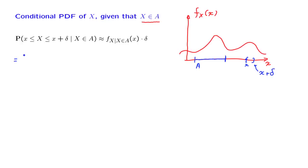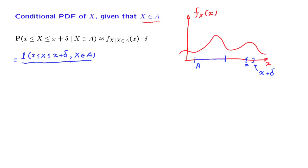Let us write the definition of a conditional probability. A conditional probability, by definition, is equal to the probability that both events occur, divided by the probability of the conditioning event.